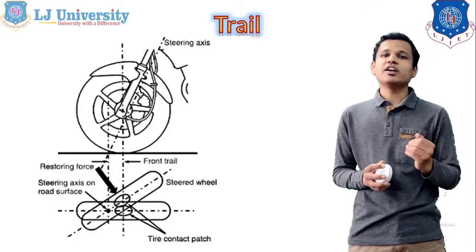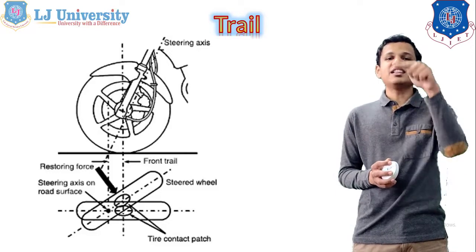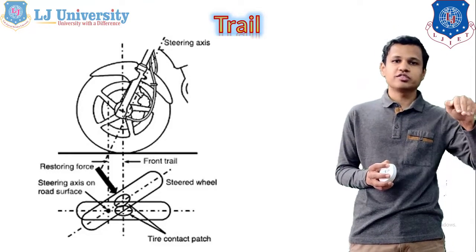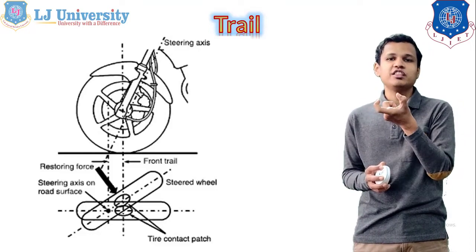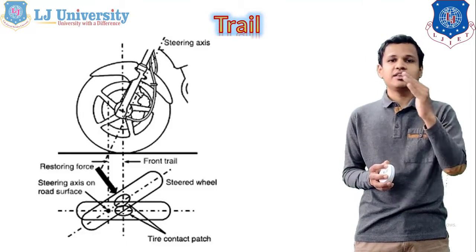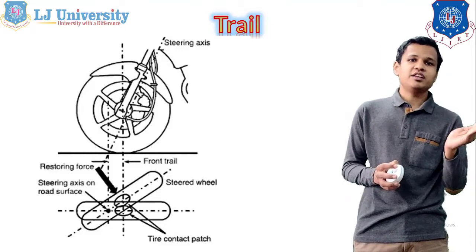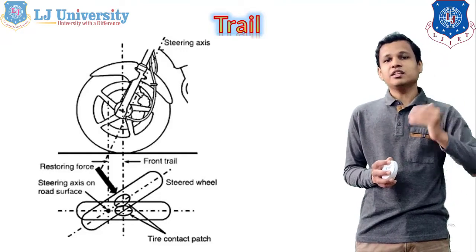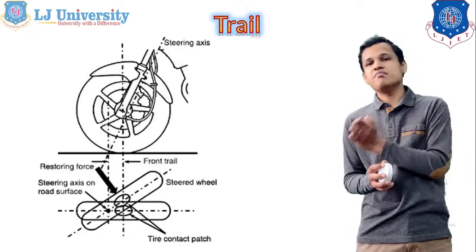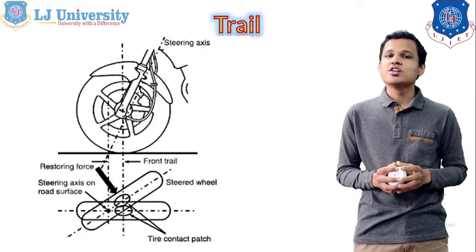The first factor is trail. In the figure, you can see in the top part the angle that the steering axis makes with the vertical line. These two lines intersect at the road surface, and there will be a distance between these two points — that is known as trail. If the steering axis is ahead of the vertical line, then the trail will be known as positive trail. If the steering axis is behind the vertical line, it will be known as negative trail, same as the castor angle in four wheelers.